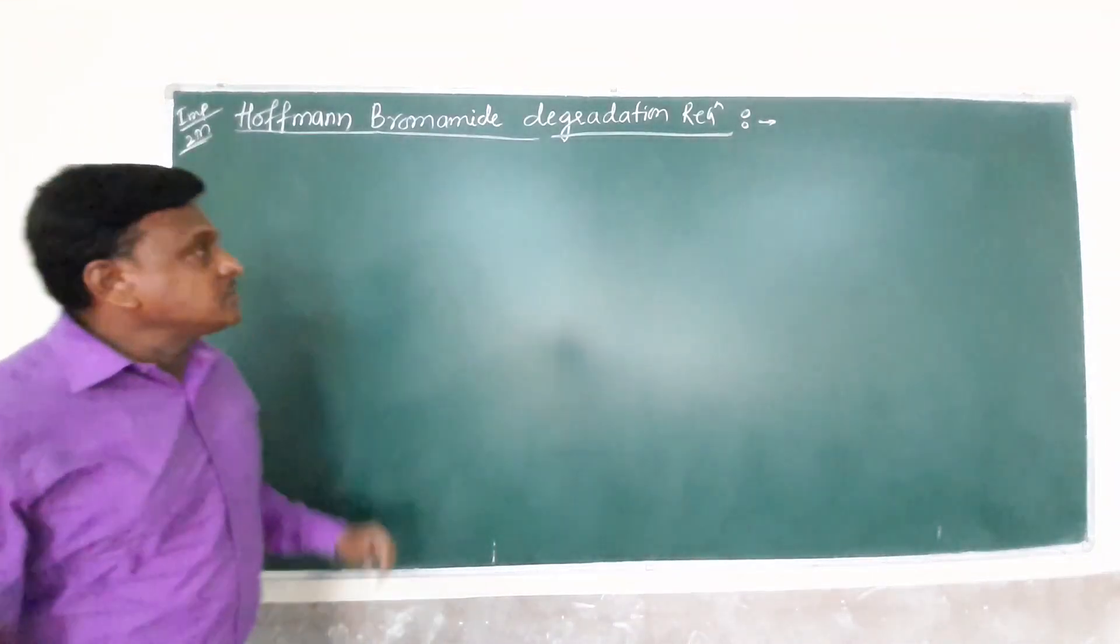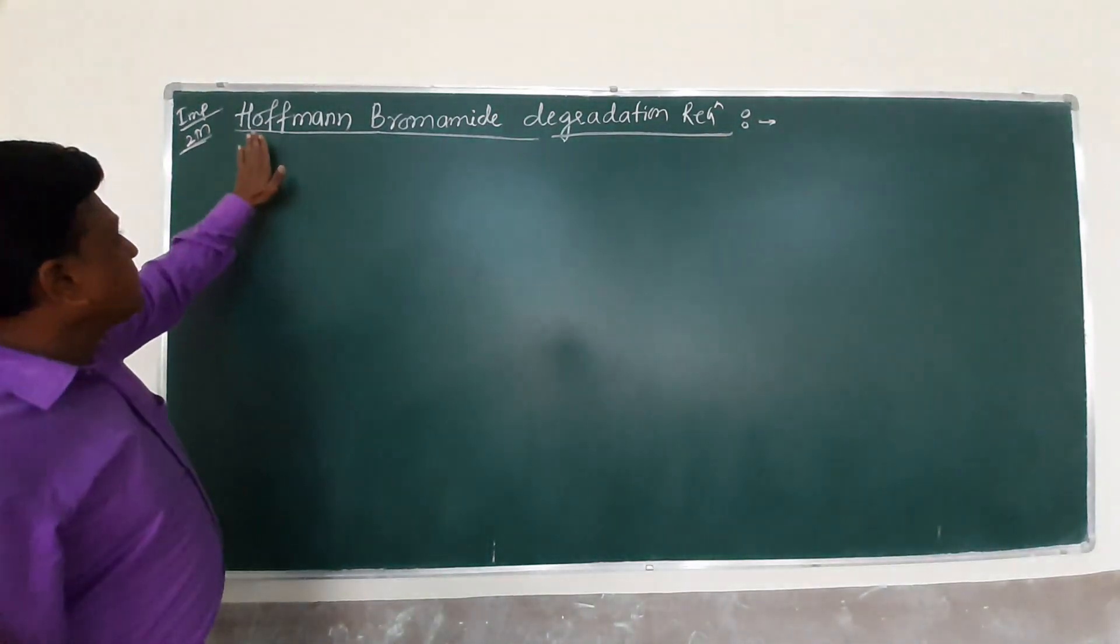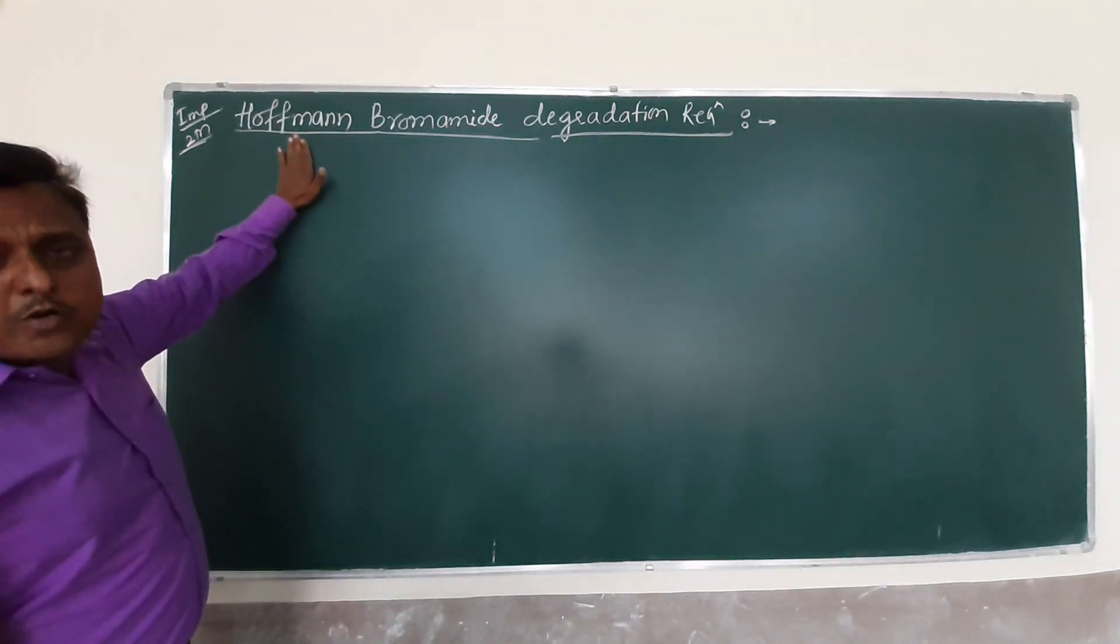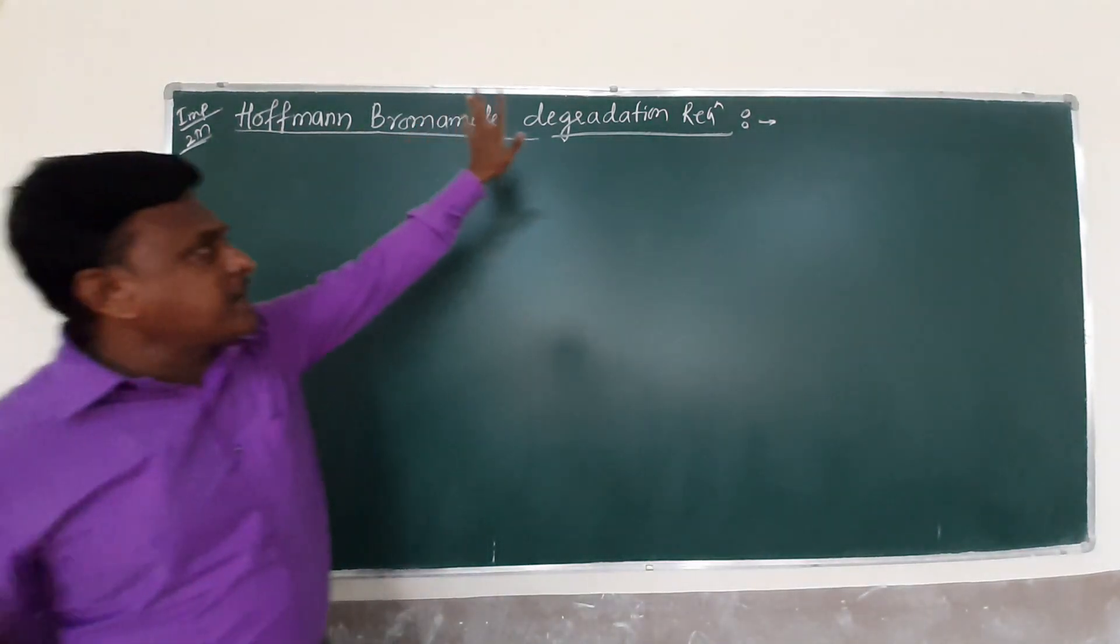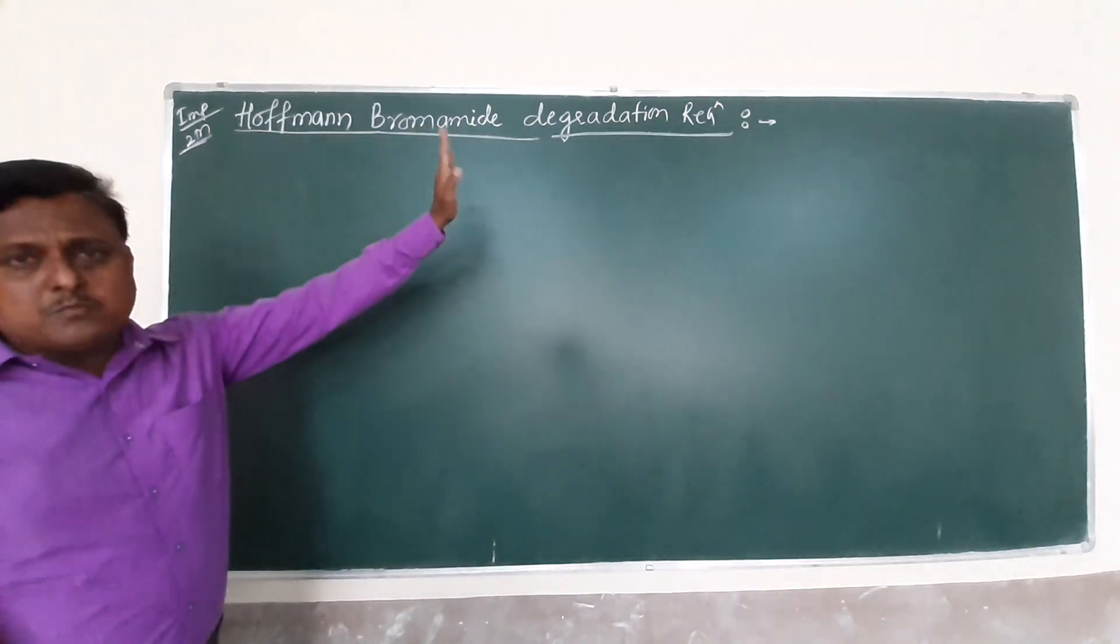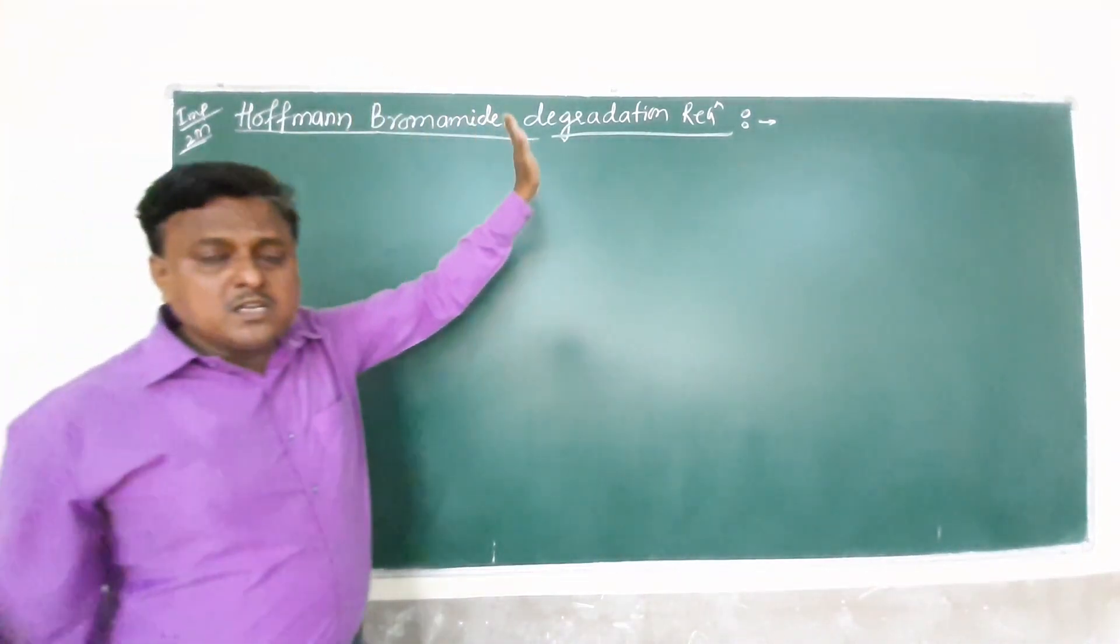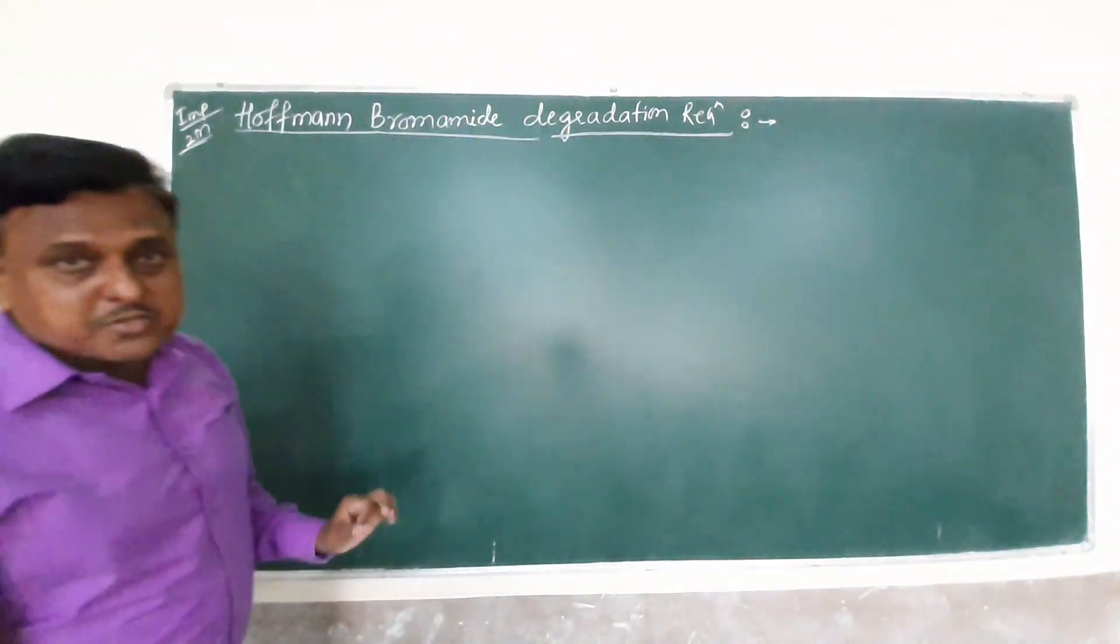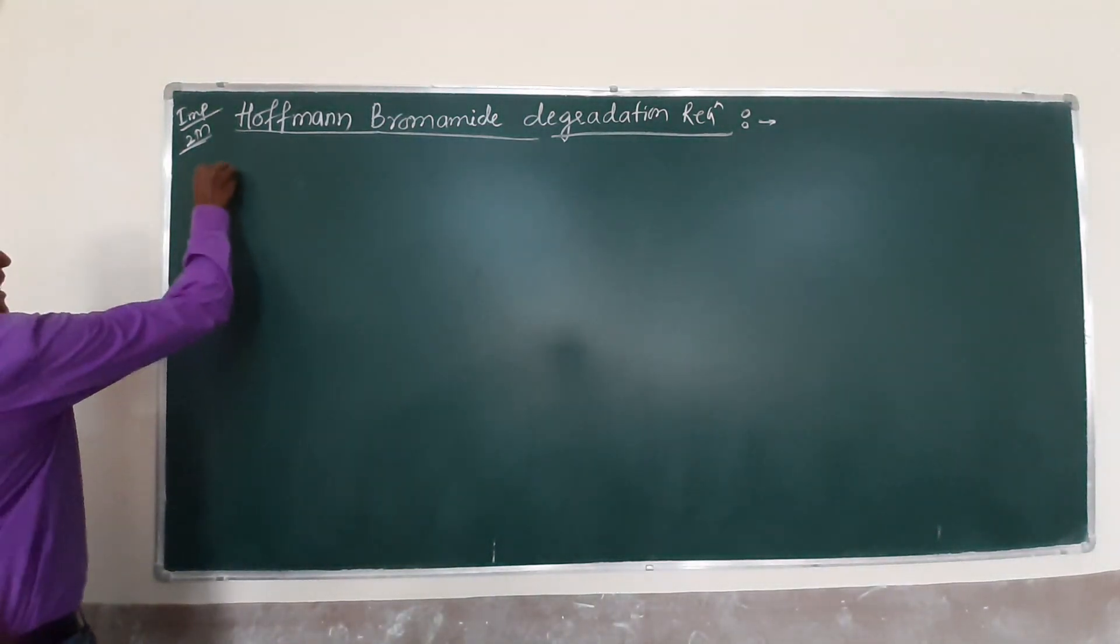Welcome dear everyone. In this video we continue the part of the chapter Amides. Today friends we have a very important reaction in this chapter, Hoffman Bromamide Degradation Reaction. Commonly we call it Hoffman Bromination Reaction. This reaction is to prepare different amides, especially primary amides.